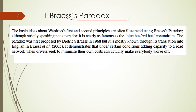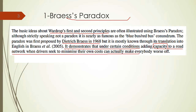Braess's Paradox is based on Wardrop's first and second equilibrium principles. It was discovered by a scientist named Dietrich Braess in 1968. It demonstrates that under certain conditions, adding capacity — meaning a new road to a road network — in order to decrease travel time can actually make everybody worse off.